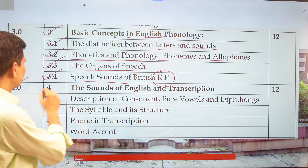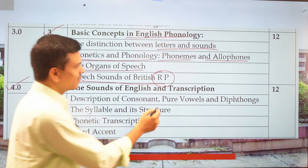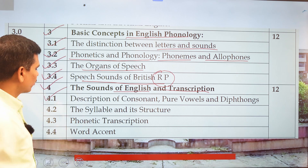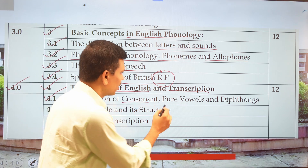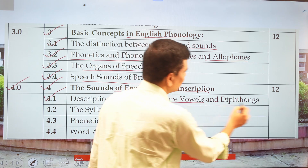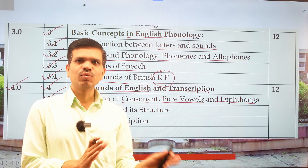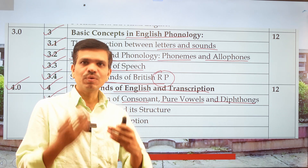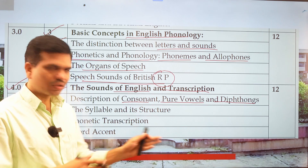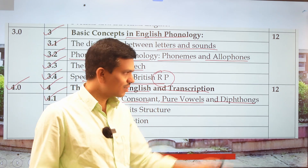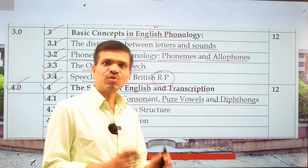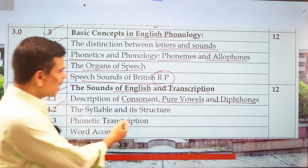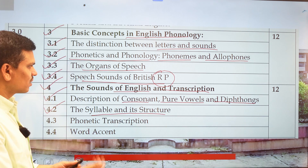Module 4.0 — Unit 4 — covers the sounds of English and transcription. In point 4.1, we look at the description of consonants, pure vowels, and diphthongs. There are 44 sounds in English, and we will see how they are divided: how many consonants, how many pure vowels, how many diphthongs, and how many triphthongs there are.